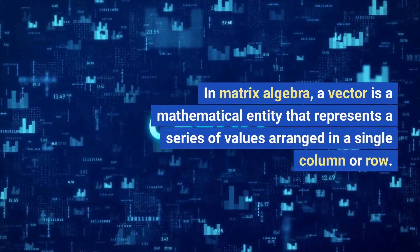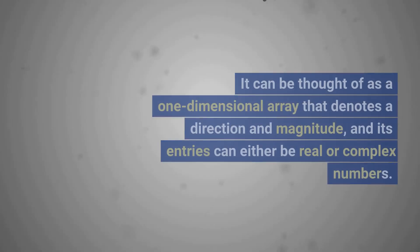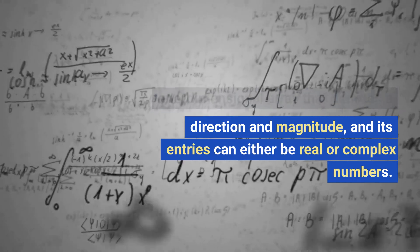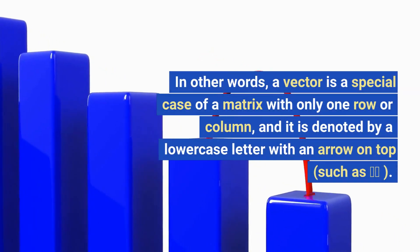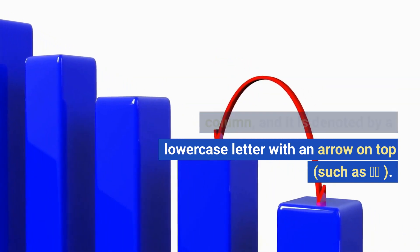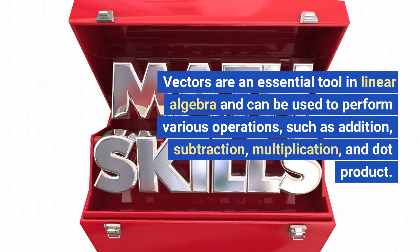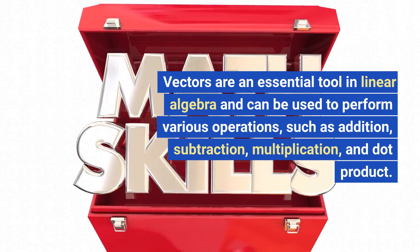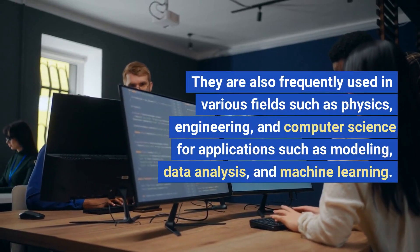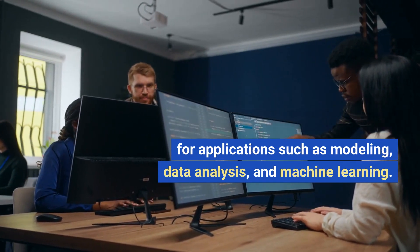In matrix algebra, a vector is a mathematical entity that represents a series of values arranged in a single column or row. It can be thought of as a one-dimensional array that denotes a direction and magnitude, and its entries can either be real or complex numbers. A vector is a special case of a matrix with only one row or column, and it is denoted by a lowercase letter with an arrow on top, such as V. Vectors are an essential tool in linear algebra and can be used to perform various operations such as addition, subtraction, multiplication, and dot product. They are also frequently used in physics, engineering, and computer science for applications such as modeling, data analysis, and machine learning.